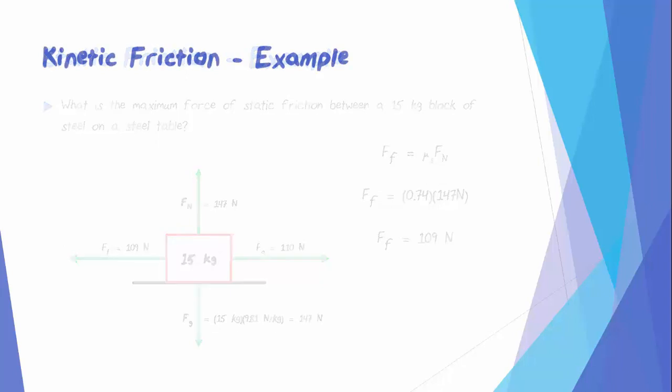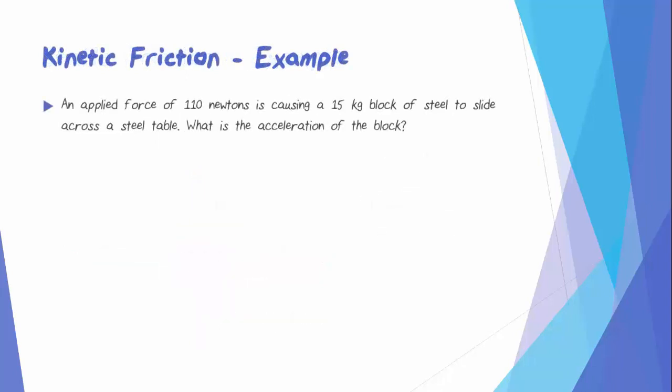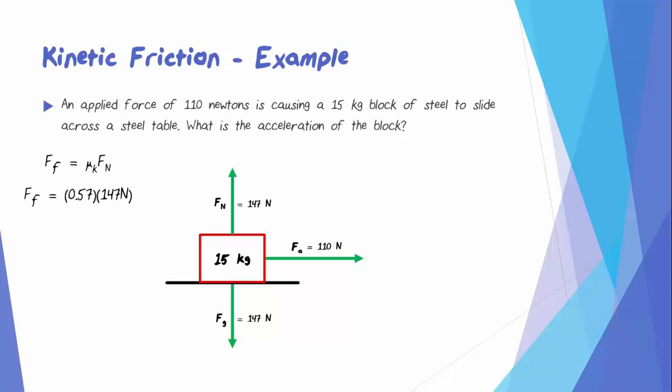Now let's look at kinetic friction. If an applied force of 110 newtons is causing a 15 kilogram block of steel to slide across a steel table, what is the acceleration of the block? Again, we'll start with the free body diagram. We know the weight is 147 newtons, the normal force is 147 newtons, and now the applied force is 110 newtons. We can look up the kinetic coefficient of friction for steel on steel from the reference table and calculate that the force of friction is 84 newtons. Now we just have to apply Newton's second law. The net force would be the difference between 110 newtons and 84 newtons, which gives us 34 newtons over 15 kilograms for an acceleration of 2.3 meters per second squared.